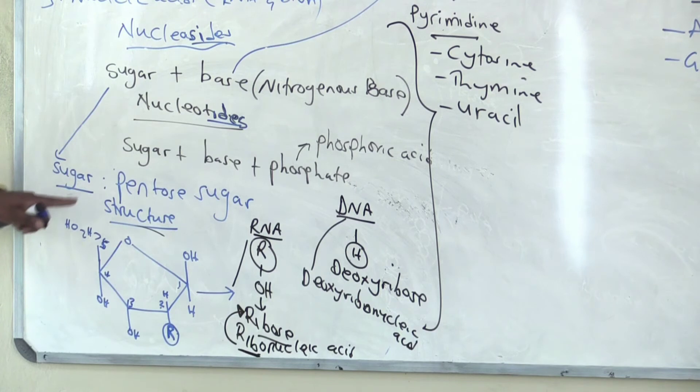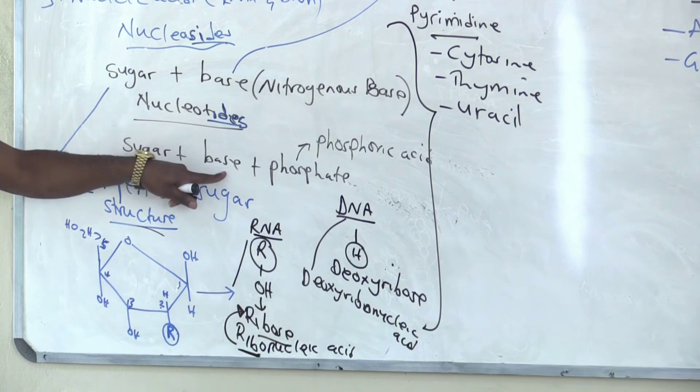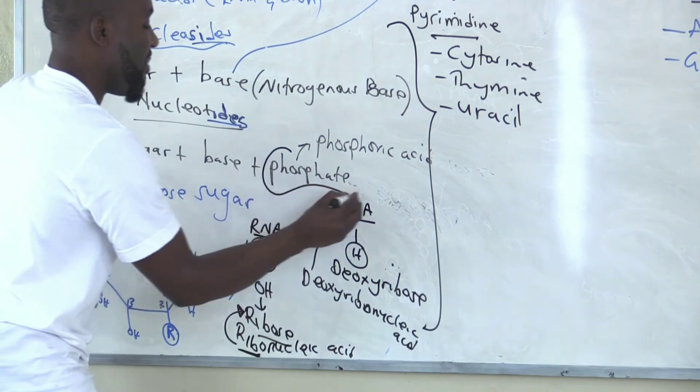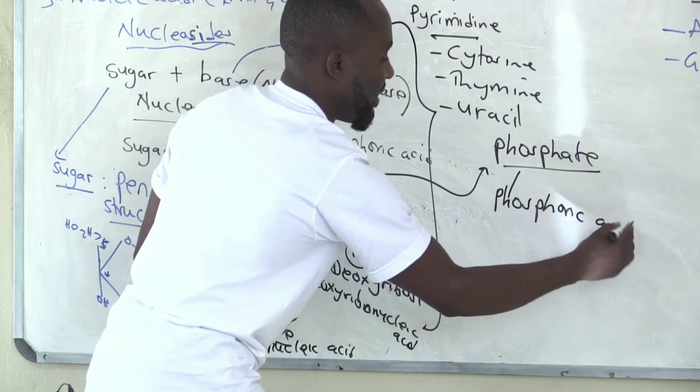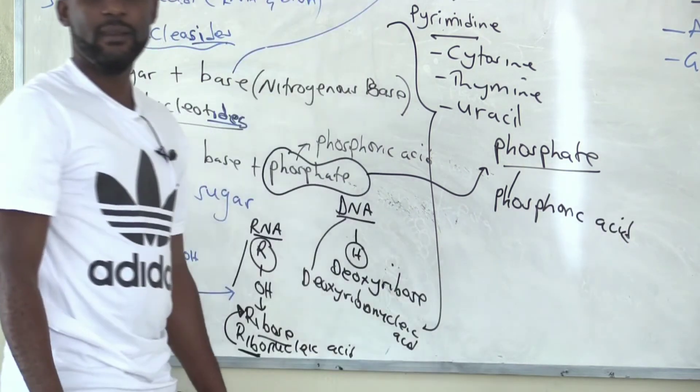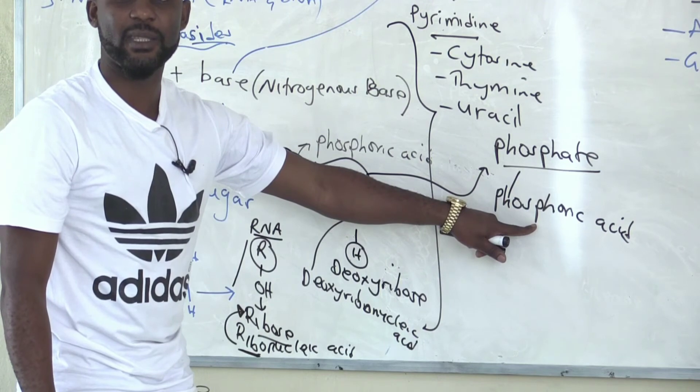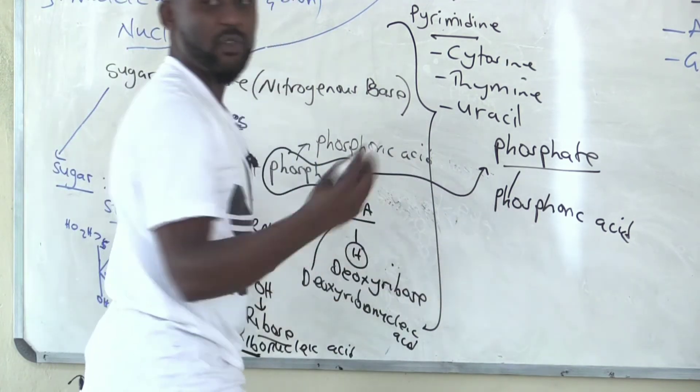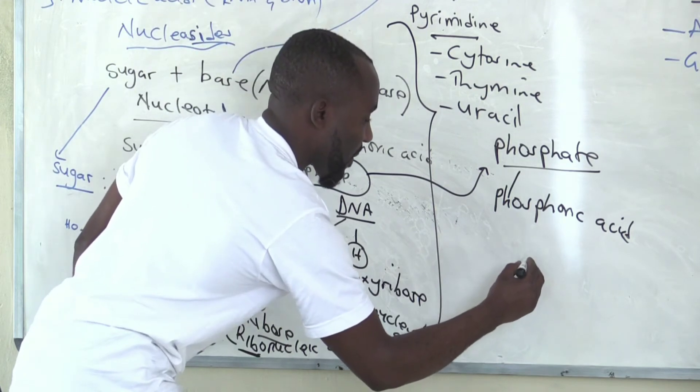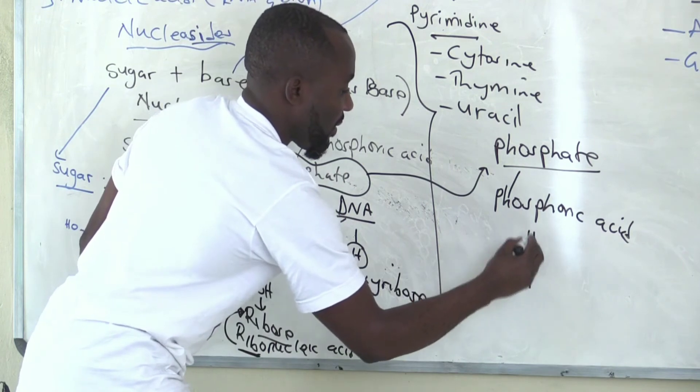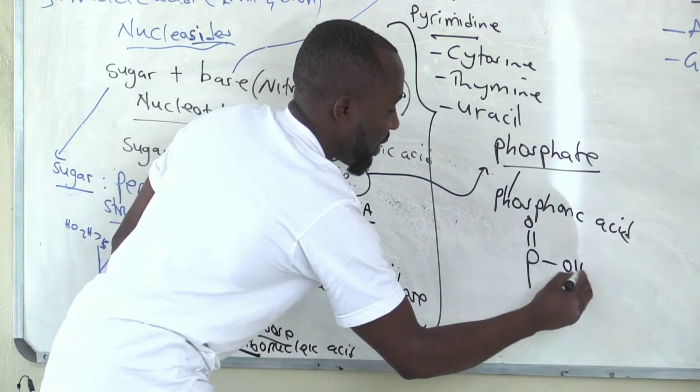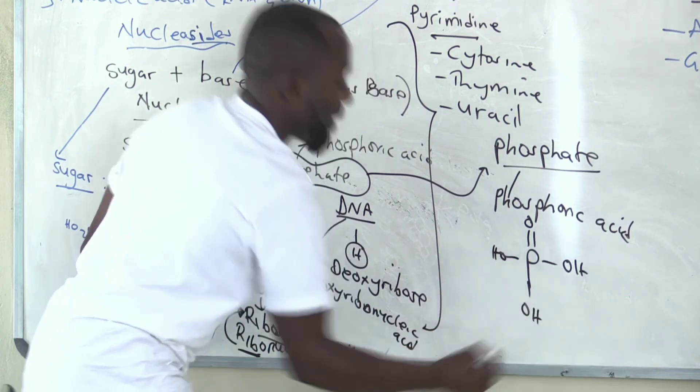So I have described for you the sugar and the nitrogenous base. What is remaining is the phosphate. Remember I said that its source is phosphoric acid. So phosphoric acid is the source. How does it look? The structure of phosphoric acid is phosphate that is bonded to oxygen. We have OH there. That is phosphoric acid.